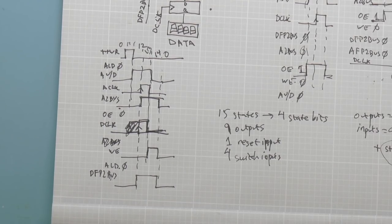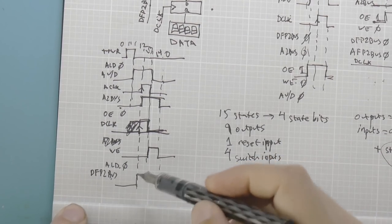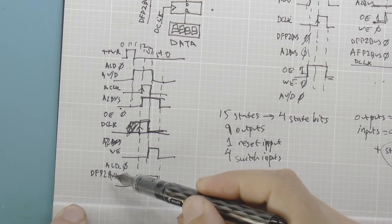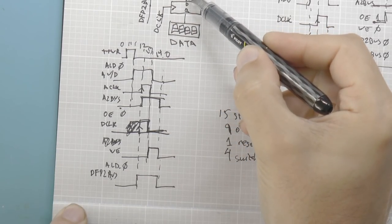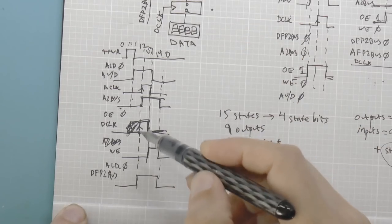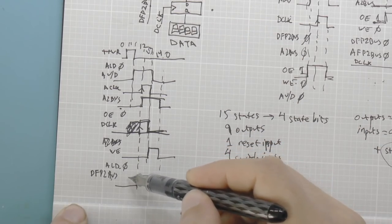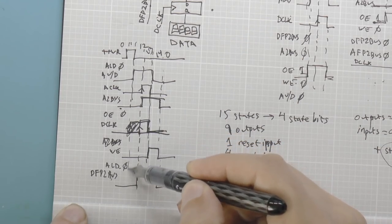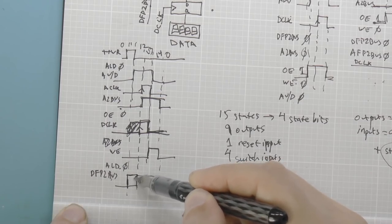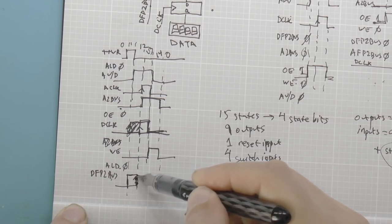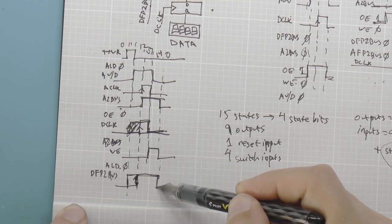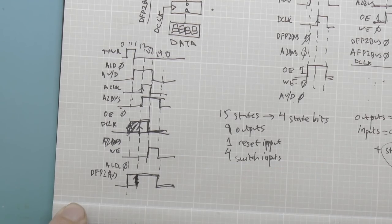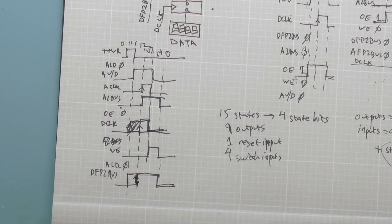Some of you may have been yelling at the screen — the data front panel to bus signal has to be put onto the bus before we clock the data in. So it actually has to go high earlier and be released later. Slight mistake, but corrected before we actually did anything.